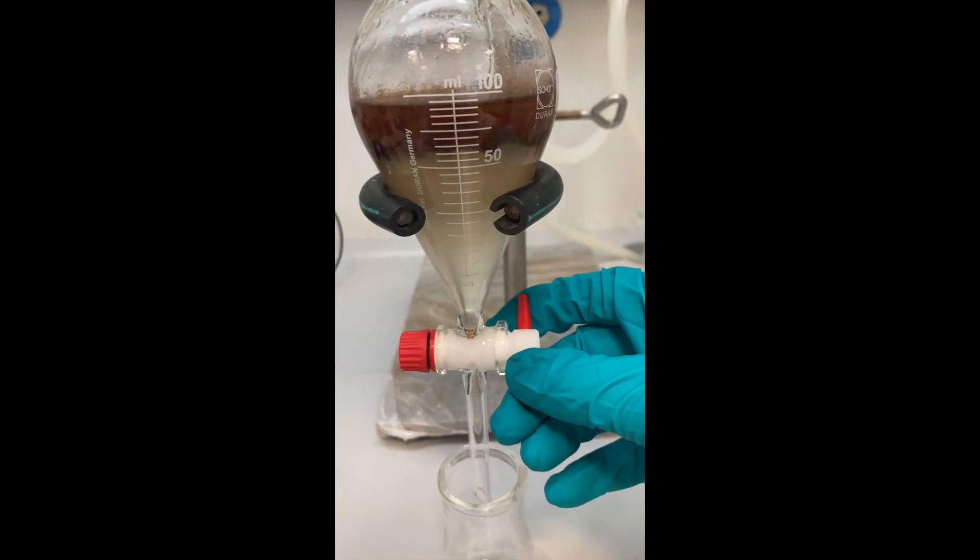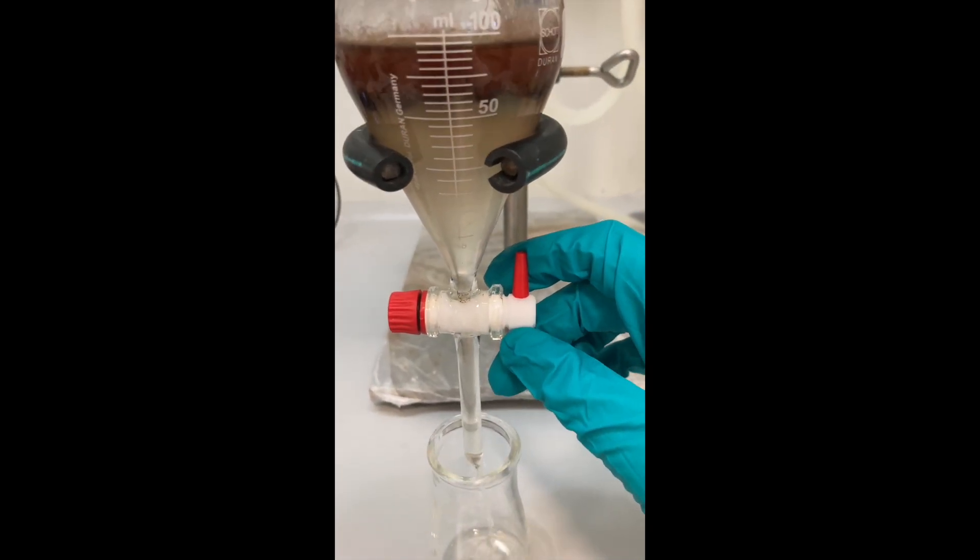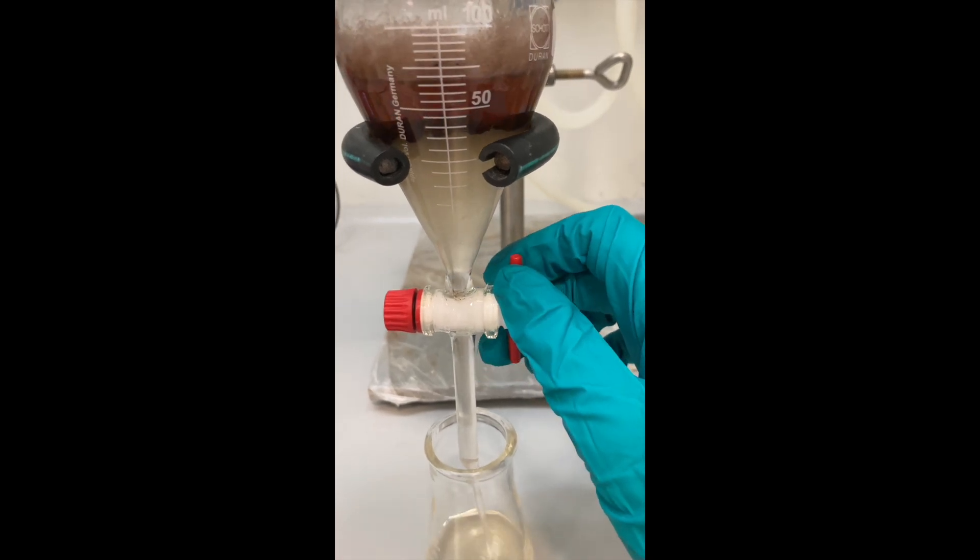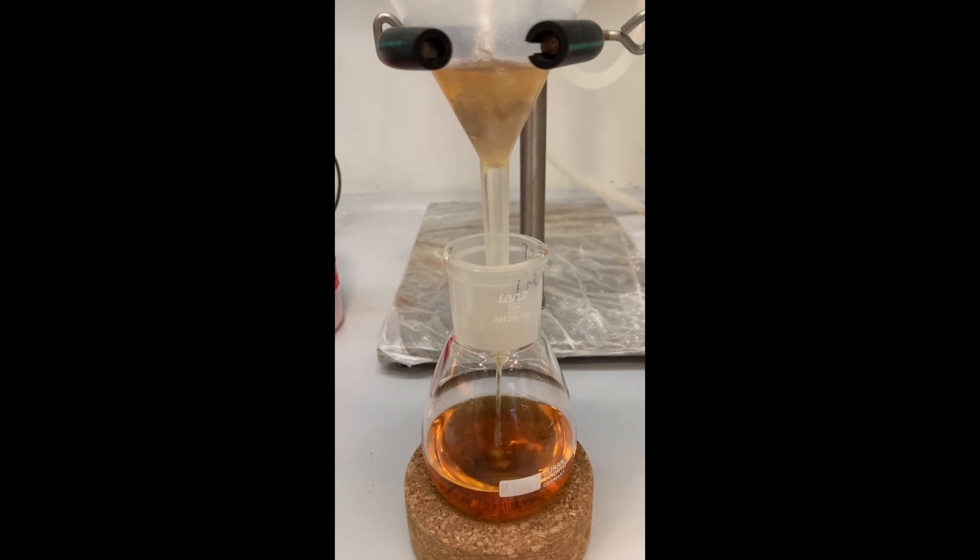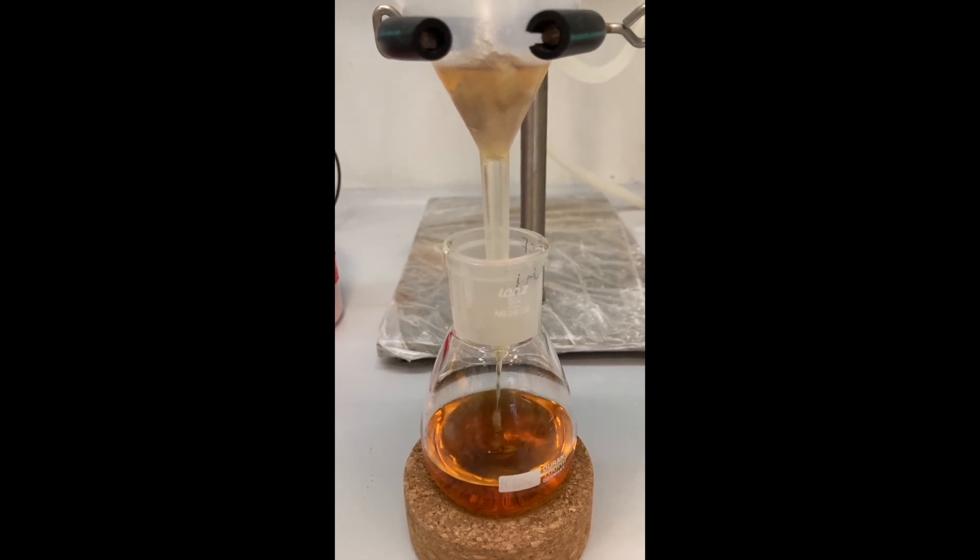I then rinsed the organic layer with a saturated solution of potassium carbonate. I dried the resulting organic extract with magnesium sulfate and filtered the solution through a cotton plug to remove the drying agent.